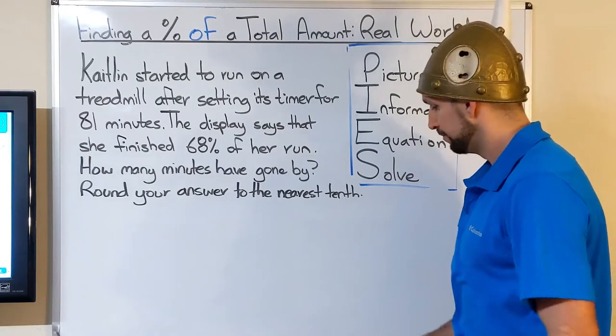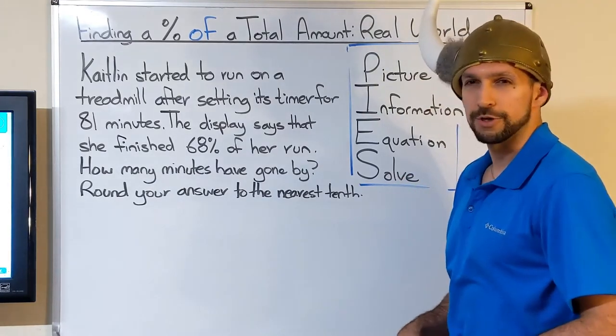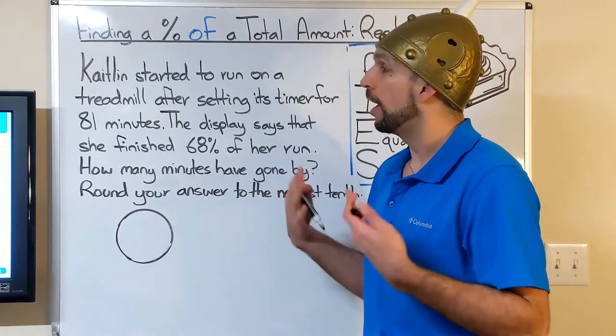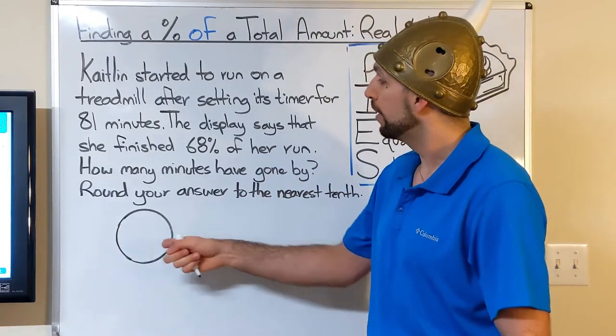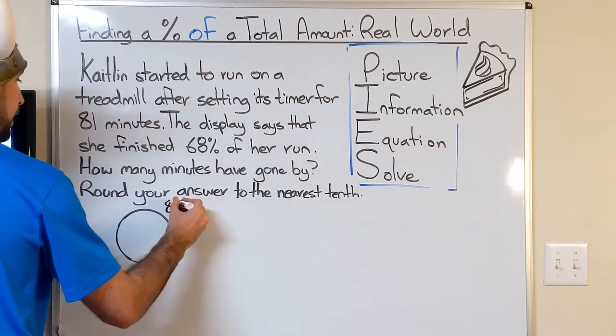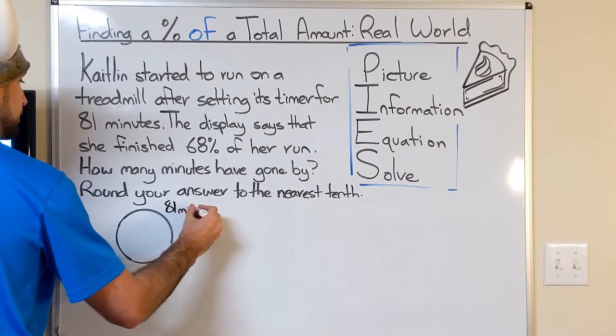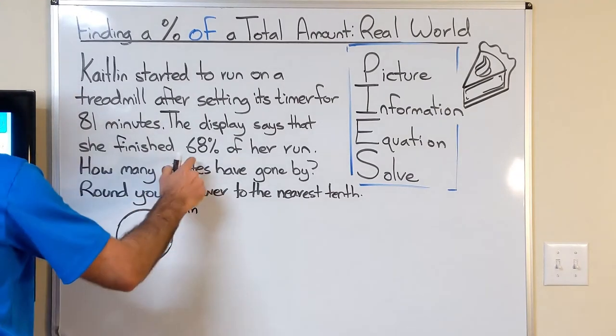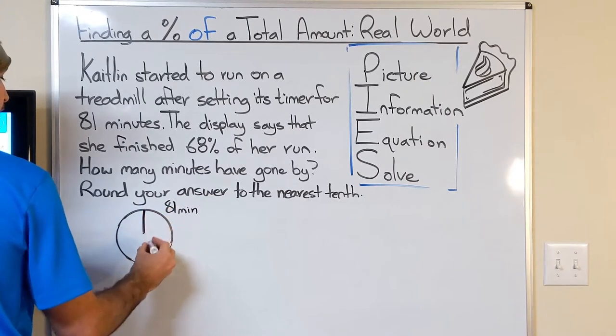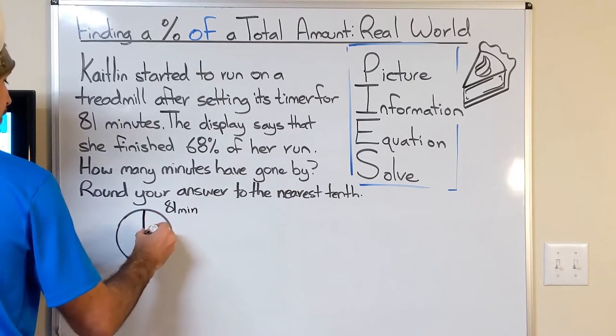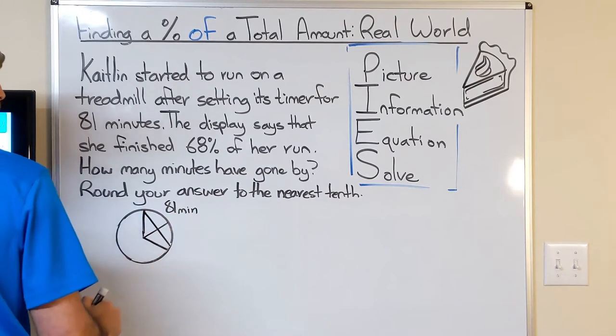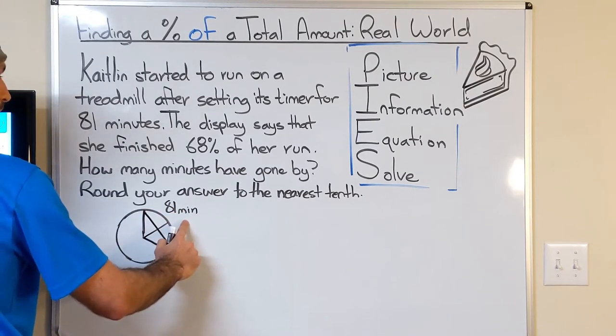Okay, so she's running. Let's draw a circle. Nice circle. So if she were to run 100% of her time, she would have run the whole amount, or all of 81 minutes. But she only ran 68% of that, so that's just a little less than three-fourths of that time. So certainly less than 81 minutes.